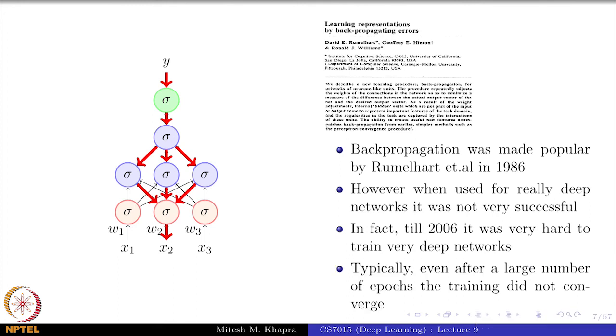In fact, till 2006 it was very hard to train very deep networks. And typically even after a large number of epochs, these networks did not converge that means, they were still at a very high loss and although in principle everything is fine, you have a deep neural network, you have an algorithm that can train it, but you are still not being able to train it properly and you are not being able to make any practical use of that. So, that was the story till 2006.